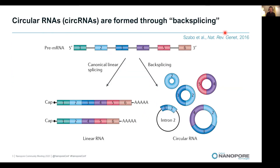We know that human genes can generate distinct RNA isoforms through alternative splicing of the precursor messenger RNA. Splicing usually occurs in a linear fashion from the five prime to three prime end of the transcript. But in some cases, splicing could occur in a nonlinear fashion through a process called back-splicing, in which a downstream five prime splice site is ligated back to an upstream three prime splice site, generating a unique type of RNA species called circular RNAs.